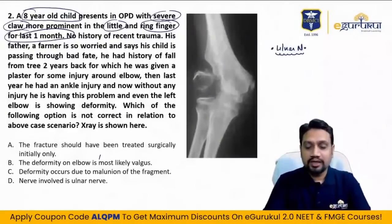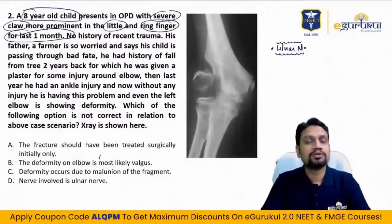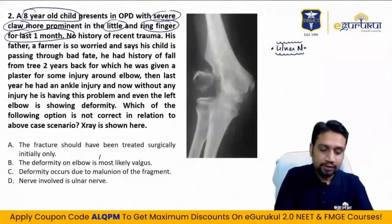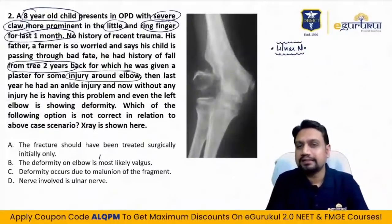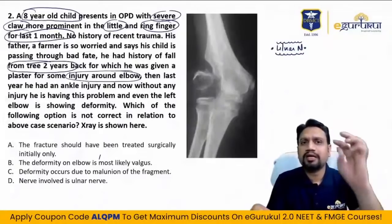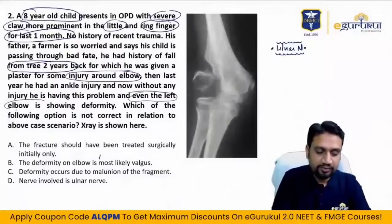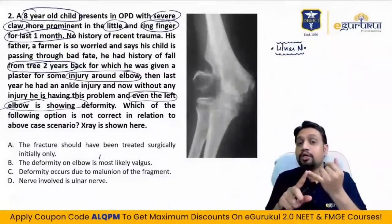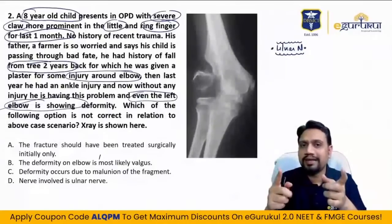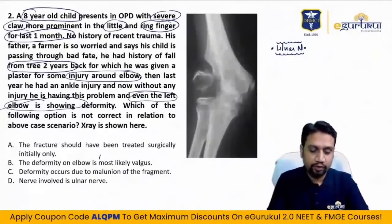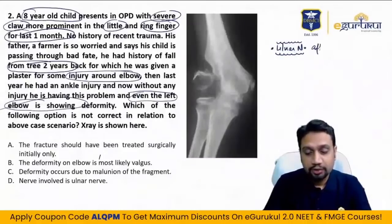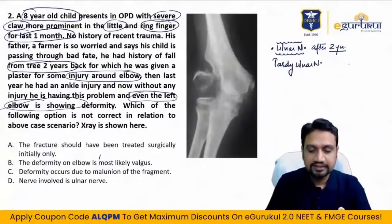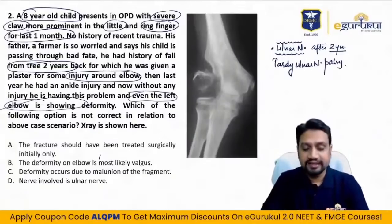As a clinician: right now there is ulnar nerve involvement, no trauma. There is a hint that two years back he fell from a tree with injury around the elbow. The ankle injury last year doesn't seem relevant since the problem is in the upper limb. Elbow deformity with two-year-old trauma and now claw — the diagnosis is tardy ulnar nerve palsy.